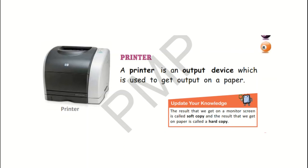Children, kindly pay attention here — update your knowledge. The result that we get on a monitor screen is called a soft copy, and the result that we get on paper is called a hard copy.